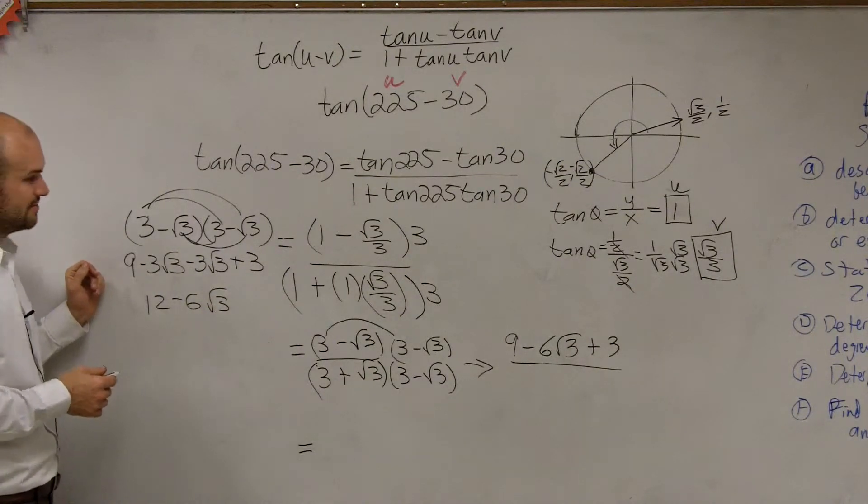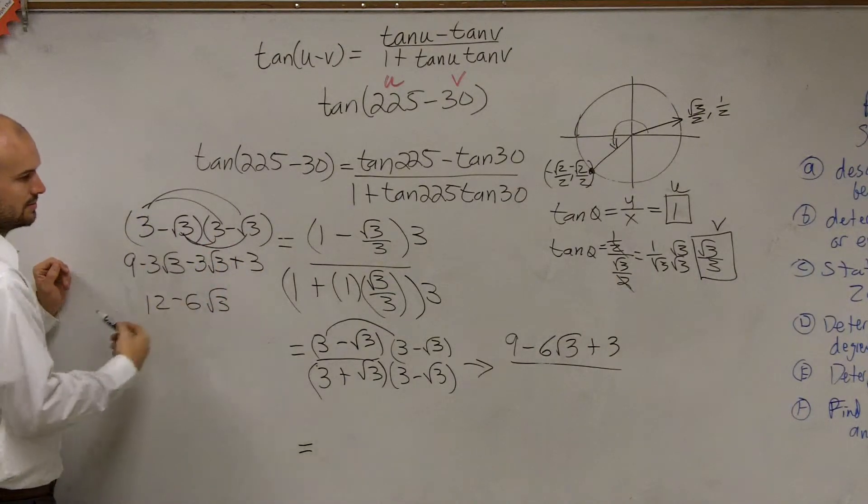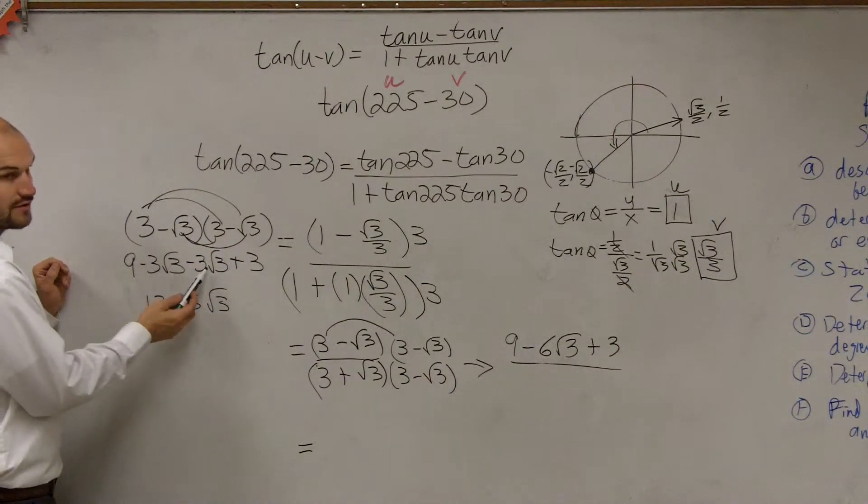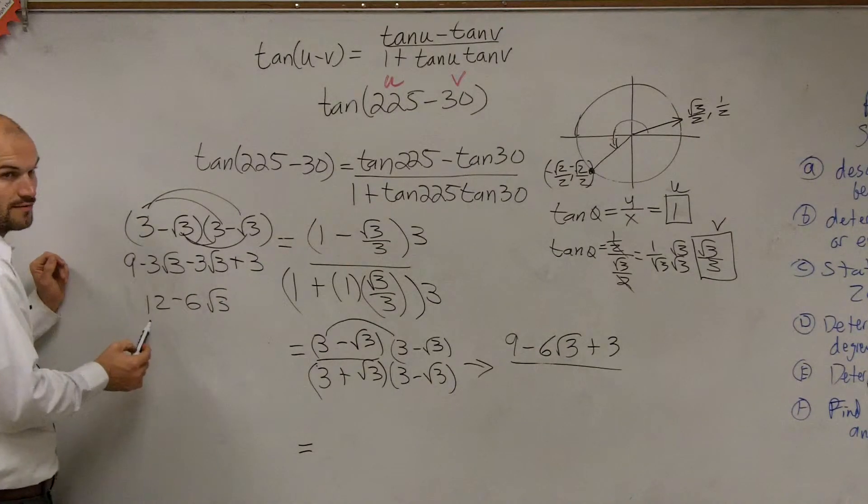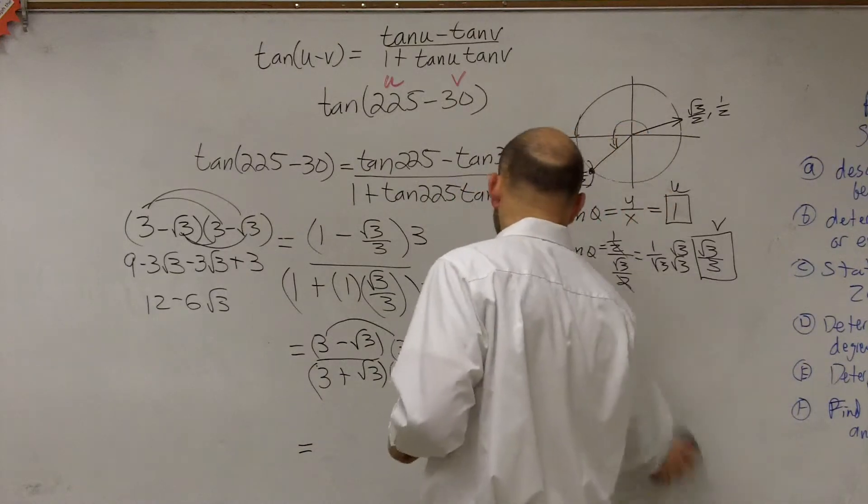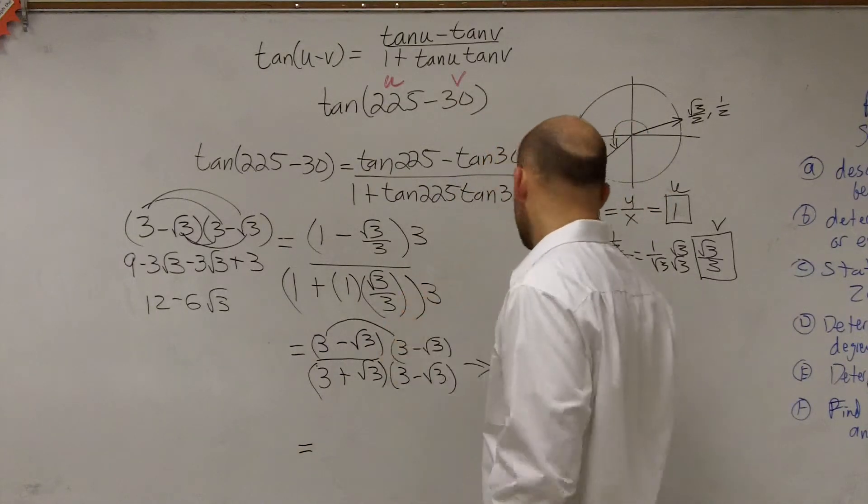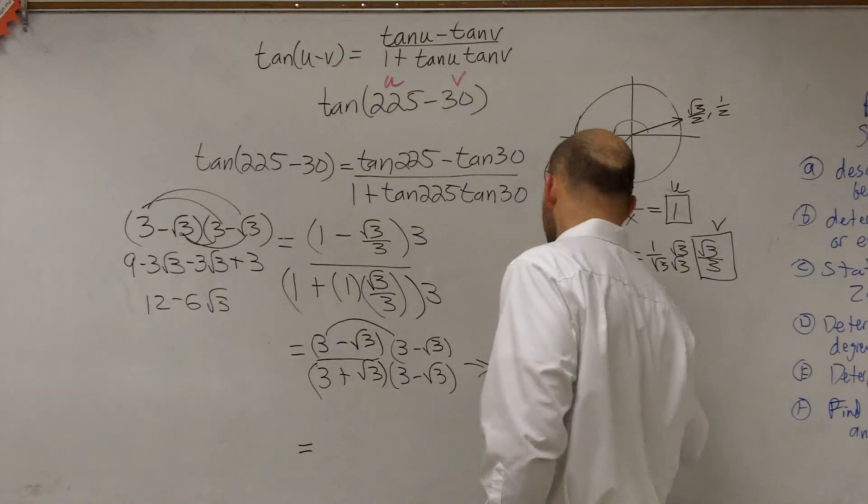Just doing FOIL. Negative 3 square root of 3, negative 3 square root of 3 becomes negative 6 square root of 3. 3 plus 9 is 12. So, let me rewrite that answer. That's going to become 12 minus 6 square root of 3.